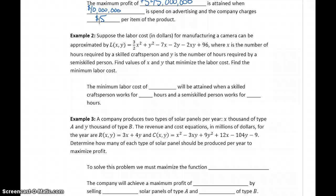In example 2, we suppose the labor costs in dollars for manufacturing a camera can be approximated by this given function, where x is the number of hours required by a skilled craftsperson, y is the number of hours required by a semi-skilled person. So we have people of two different skill levels, which would mean different amounts of pay. We want to find the values of x and y that minimize the labor cost and find that minimum labor cost.